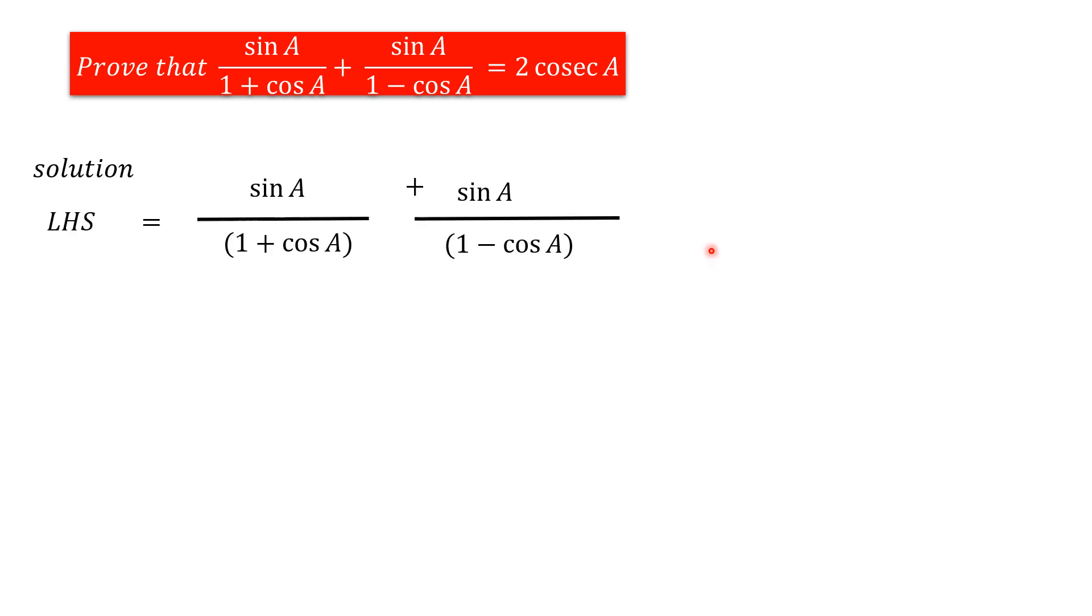For this, we take left hand side value. Then we have to do LCM. For this, we can do cross multiplication. So, sin A into 1 minus cos A plus sin A into 1 plus cos A.